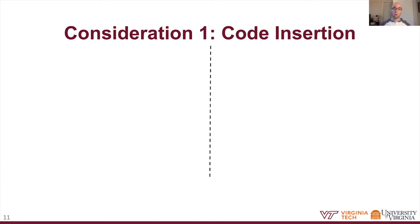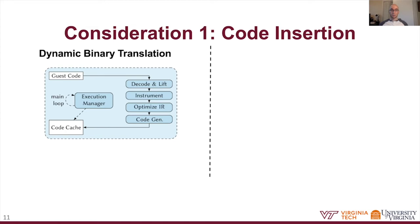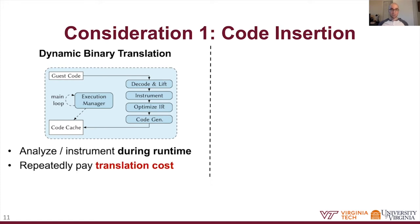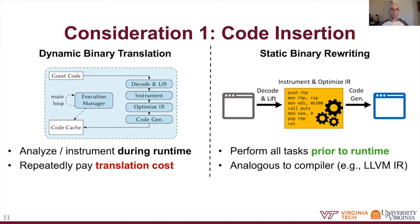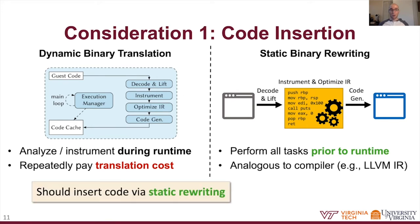For code insertion, we have two basic options. The first, dynamic translation, operates by running an input binary and instrumenting it on the fly as it translates instructions to the host's instruction set. Because the cost of translation is high and repeatedly paying this cost makes dynamic translation very unworkable for maintaining compiler-level performance in fuzzing. The second category, static rewriting, operates by taking an input binary, lifting or decoding it to an intermediate representation, and applying all transformation or analysis passes at the IR level before reconstituting it to an output binary. Because static rewriting performs these heavyweight tasks prior to runtime, it is much more well-suited to attaining high-level performance, and is almost analogous to how compilers work. Thus, we conclude we need to insert code via static rewriting.